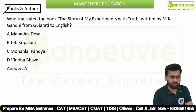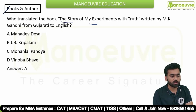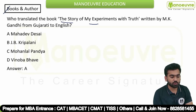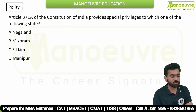As I mentioned, books and authors can have many questions. For example: 'Who translated the book The Story of My Experiments with Truth written by M.K. Gandhi from Gujarati to English?' The answer is Mahadev Desai. This is the kind of question you can expect. There were many polity-related questions as well, and then current affairs.